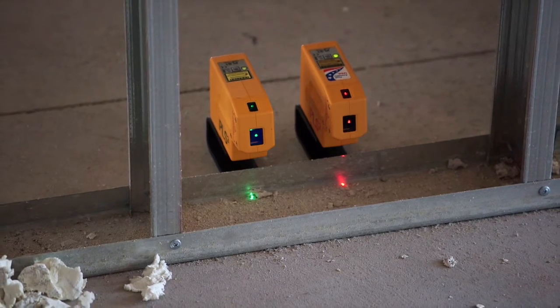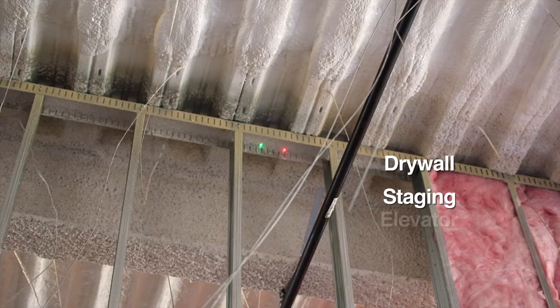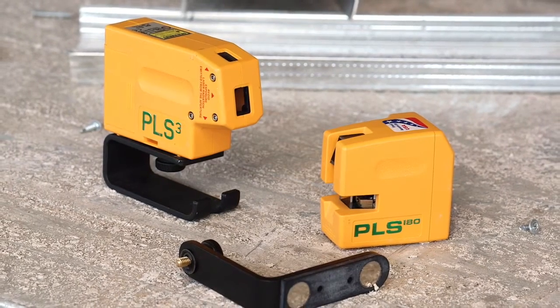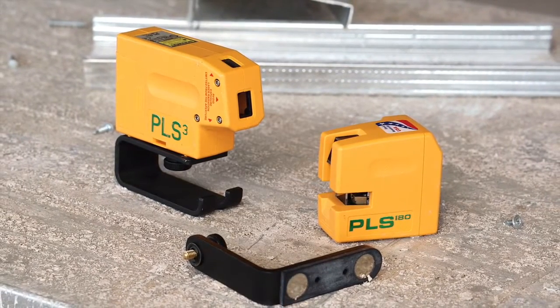Use the PLS 3 green beam for drywall, staging, elevator and electrical mechanical layout projects where bright lighting conditions on the job site require extra visibility. Like all PLS lasers, these green beam lasers come complete with useful accessories.